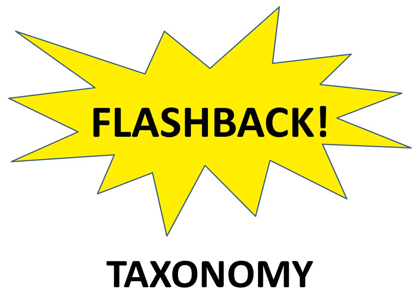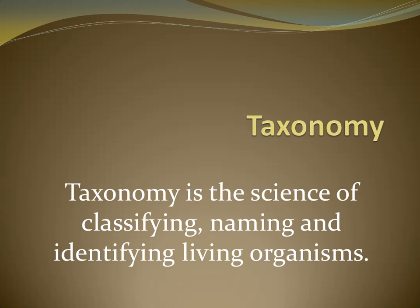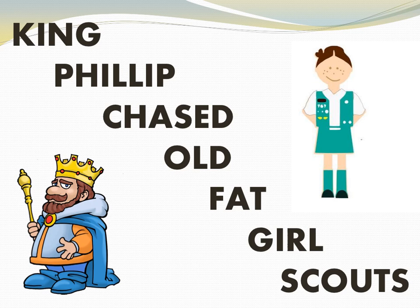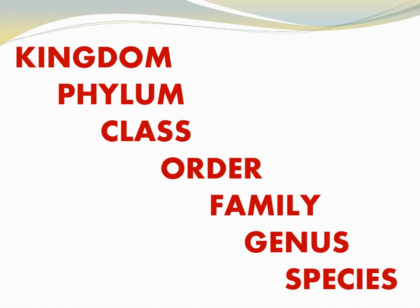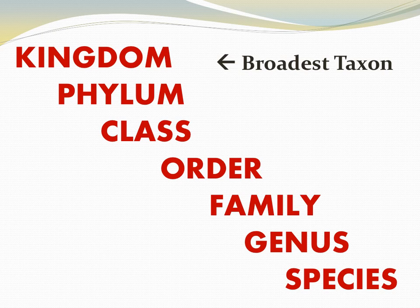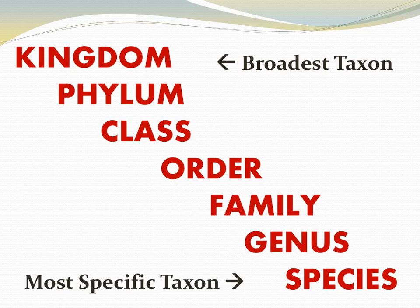Let's flashback to taxonomy. Taxonomy is the science of classifying, naming, and identifying living organisms. 'King Philip Chased Old Fat Girl Scouts' is a mnemonic device to help you remember the seven taxa of classification: Kingdom, Phylum, Class, Order, Family, Genus, Species. Outside of domain, kingdom is the broadest taxon, including the most organisms. The most specific taxon is species, which includes only one kind of organism, and all members of a species share the same scientific name.